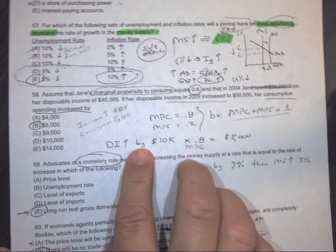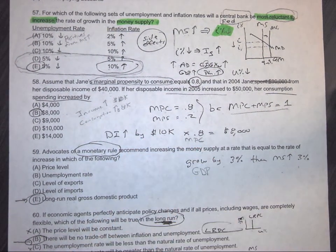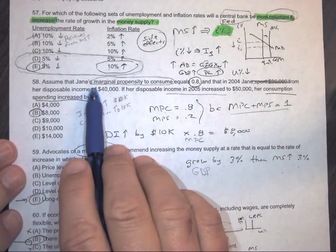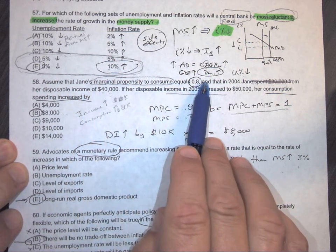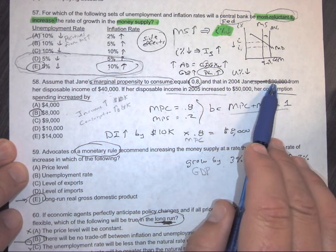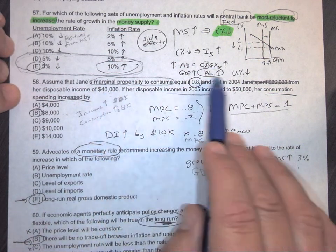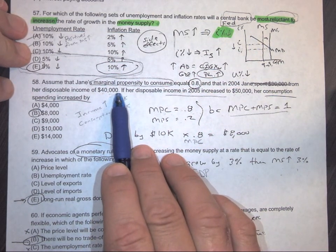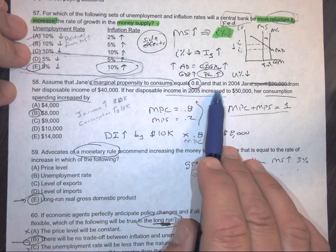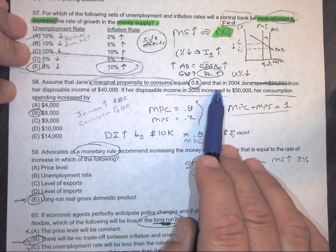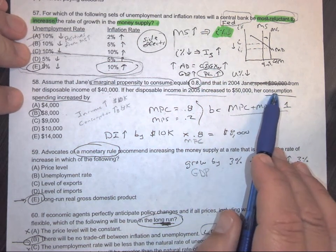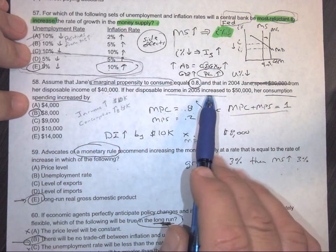Okay, number 58. This is kind of a frustrating one because of the little pieces and parts that they throw at you. All right. So assume Jane's MPC is 0.8. In 2004, she spent $36,000 from her disposable income of $40,000. So in 2004, she was making $40,000 a year, wasn't she? In 2005, she gets a raise up to $50,000 per year. That's a pretty nice raise. Her consumption spending increased by how much? Okay?